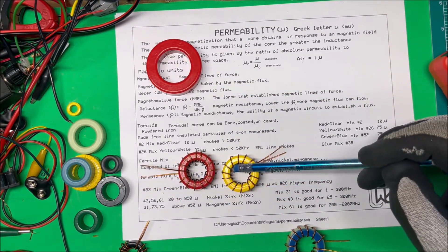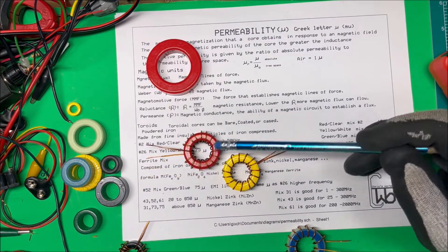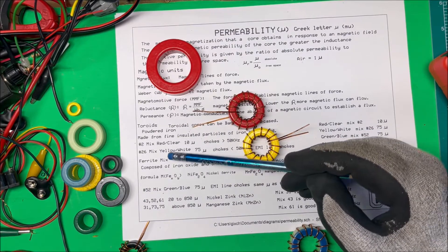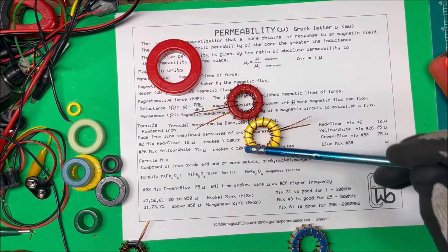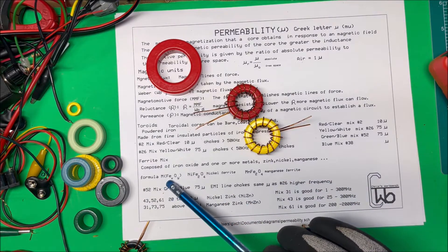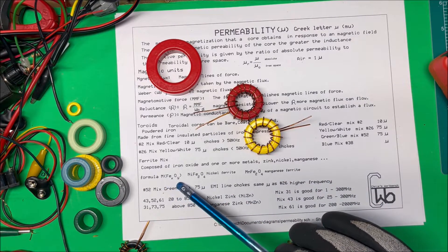And then we have, go down to the ferrite mix, and they're composed of iron oxide and one or more metals: zinc, nickel, magnesium. So the formula is M, this metal, plus the iron and oxide.